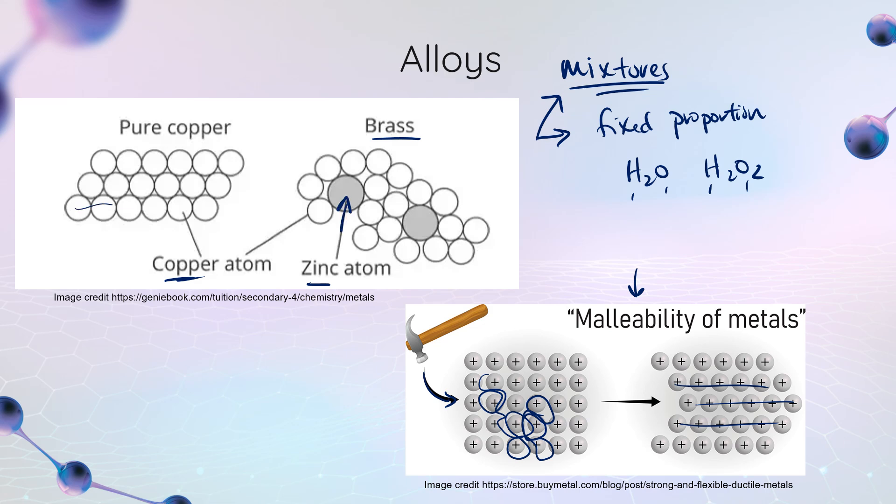But if I introduce cations of different sizes, now we don't have that lovely regularly spaced rows and columns of cations. Instead, I've got a little bit of a mess. And that little bit of a mess means that if I try to pound it, these guys just can't slide around each other as easily. So alloys are far less malleable than regular pure metals.